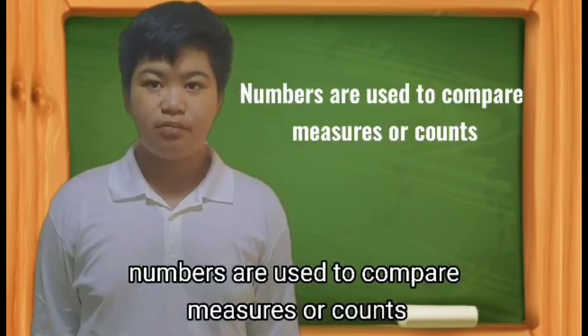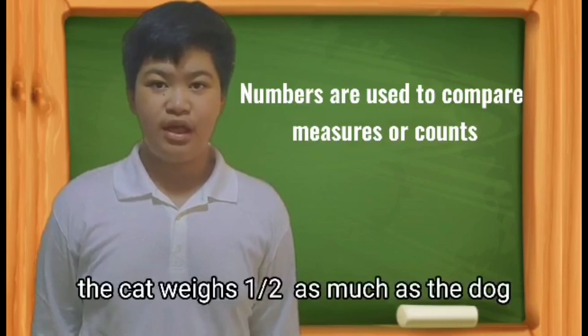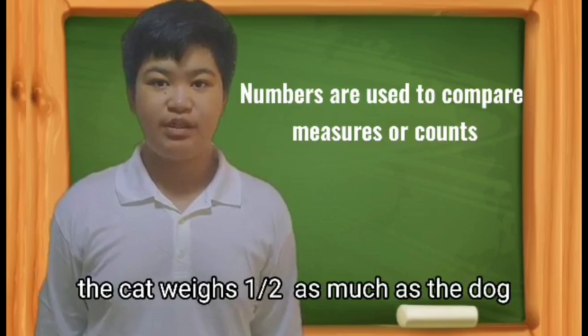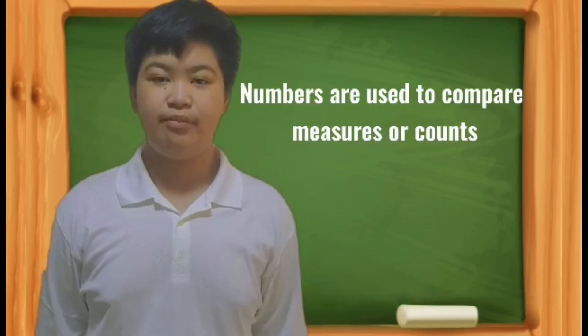Numbers are used to compare measures or counts. For example, the cat weighs one half as much as the dog. There were four times as many boys and girls at the game.